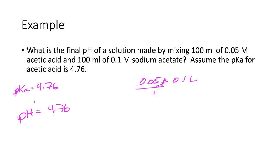So that's 0.05 times 0.1 liter. That's moles over liter. That's going to give me 0.005 moles. And we're going to do the same for sodium acetate. 100 mL equals 0.1 liters, and that's going to be 0.01 mol.